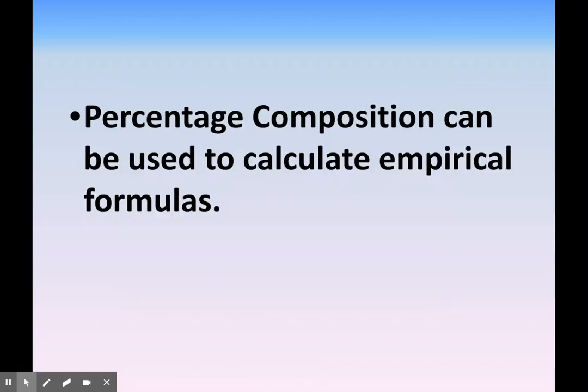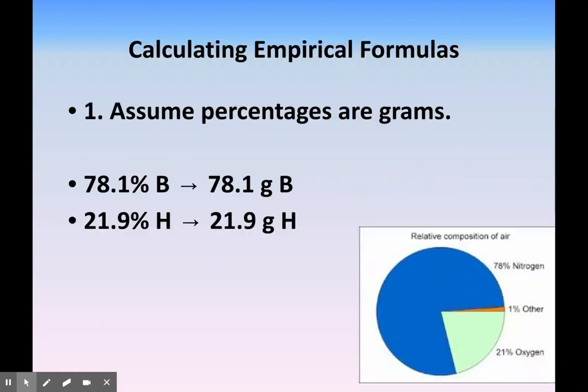We will use percent composition to calculate our empirical formula. You will be given a percentage of each element. For example, 78.1% boron and 21.9% hydrogen. The first thing we do is assume these percentages are grams. We're working with 100 grams of something, so 78.1% becomes 78.1 grams.